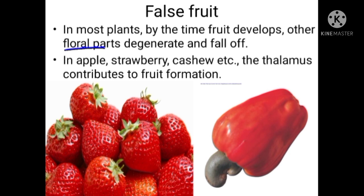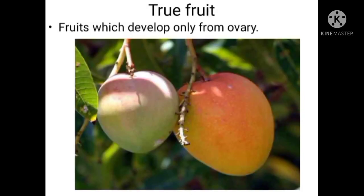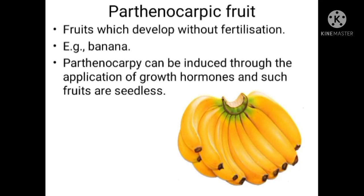Fruits can be classified as true fruits and false fruits. In fruits like apple, strawberry, and cashew, the thalamus also contributes to fruit formation. Normally only the ovary develops into the fruit, but here the thalamus also contributes, so these are called false fruits. True fruits are fruits that develop only from the ovary — for example, mango is a true fruit.